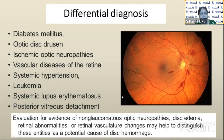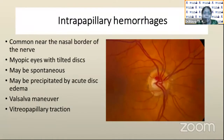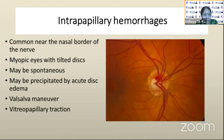We must differentiate disc hemorrhage from other conditions that can also cause it — such as diabetic mellitus, optic nerve drusen, vascular diseases of the retina, or systemic hypertension. These represent non-glaucomatous optic neuropathy, and findings like vascular tortuosity, disc edema, or retinal abnormality help in diagnosis. Intrapapillary hemorrhage may or may not be associated with glaucoma; it is common near the nasal border of the nerve and is seen with myopic eyes with tilted discs. It could be a spontaneous event or precipitated by acute disc edema or a Valsalva maneuver.